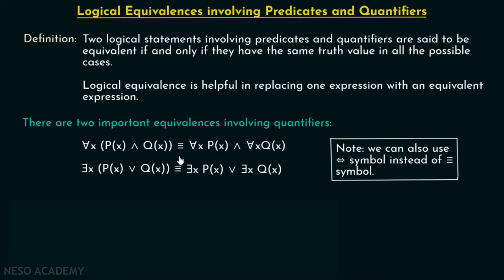This simply means we are talking about forward implication as well as backward implication. When I say for all x P(x) ∧ Q(x) is equivalent to for all x P(x) and for all x Q(x), it means: for all x P(x) ∧ Q(x) implies for all x P(x) and for all x Q(x), and also for all x P(x) and for all x Q(x) implies for all x P(x) ∧ Q(x). Equivalence is the combination of both implications.